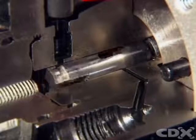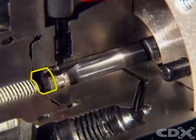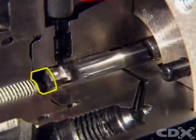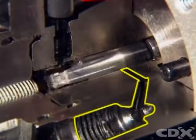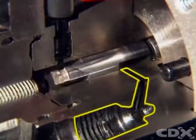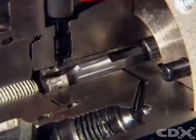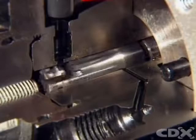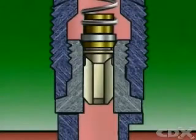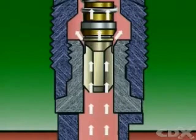Its rotation operates the fuel inlet port to the pumping chamber, and at the same time distributes pressurized fuel to the correct injector. The reciprocating motion pressurizes the fuel in the pumping chamber. The plunger's pumping action forces fuel through a delivery valve to the injector.